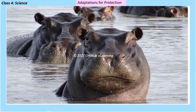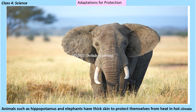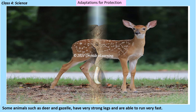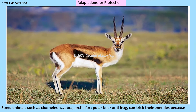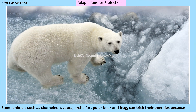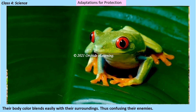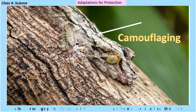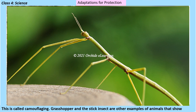Adaptations for protection: many animals have adapted themselves to protect from their enemies. Animals such as hippopotamus and elephants have thick skin to protect themselves from the heat. Some animals such as deer and gazelle have very strong legs and can run very fast. Animals such as chameleon, zebra, arctic fox, polar bear, and frog can trick their enemies because their body color blends with their surroundings — this is called camouflaging. The grasshopper and stick insect are other examples of animals that show perfect camouflage.